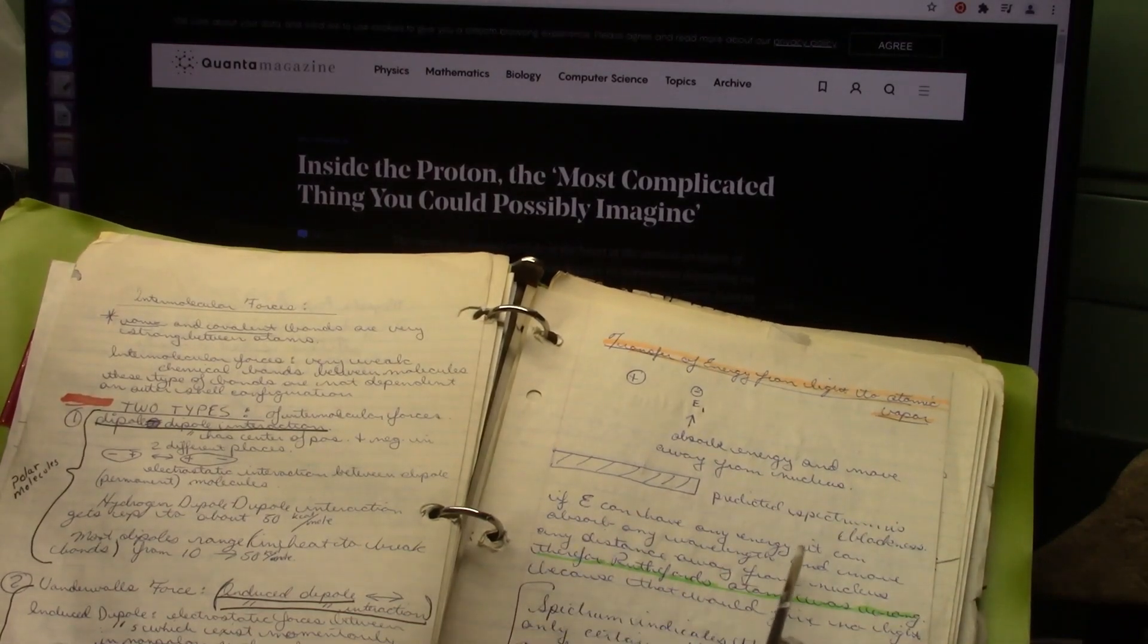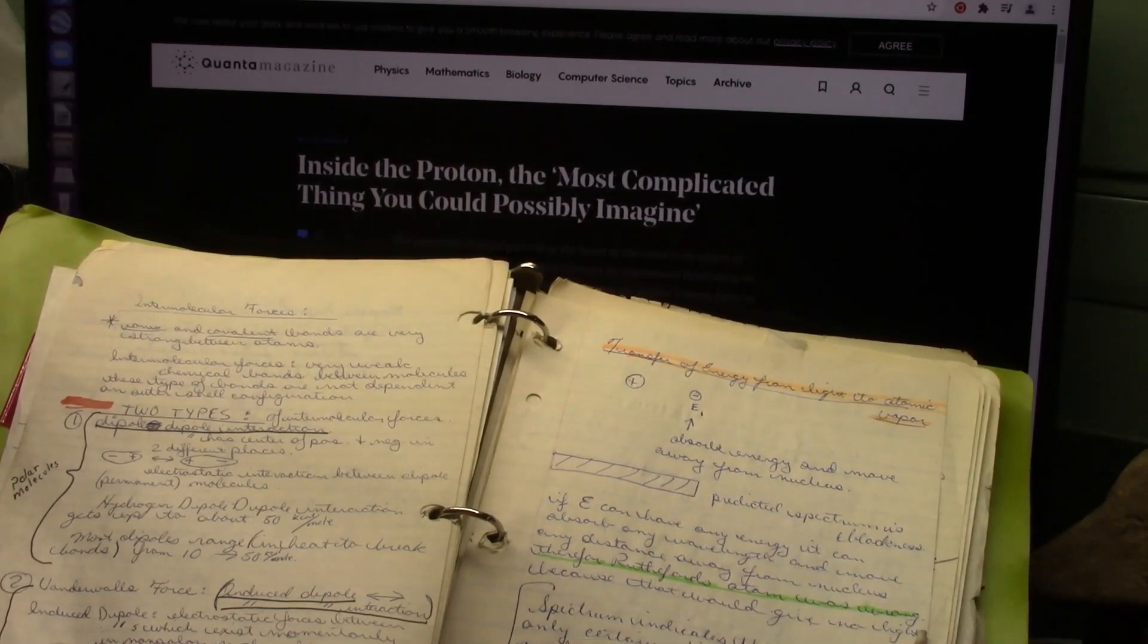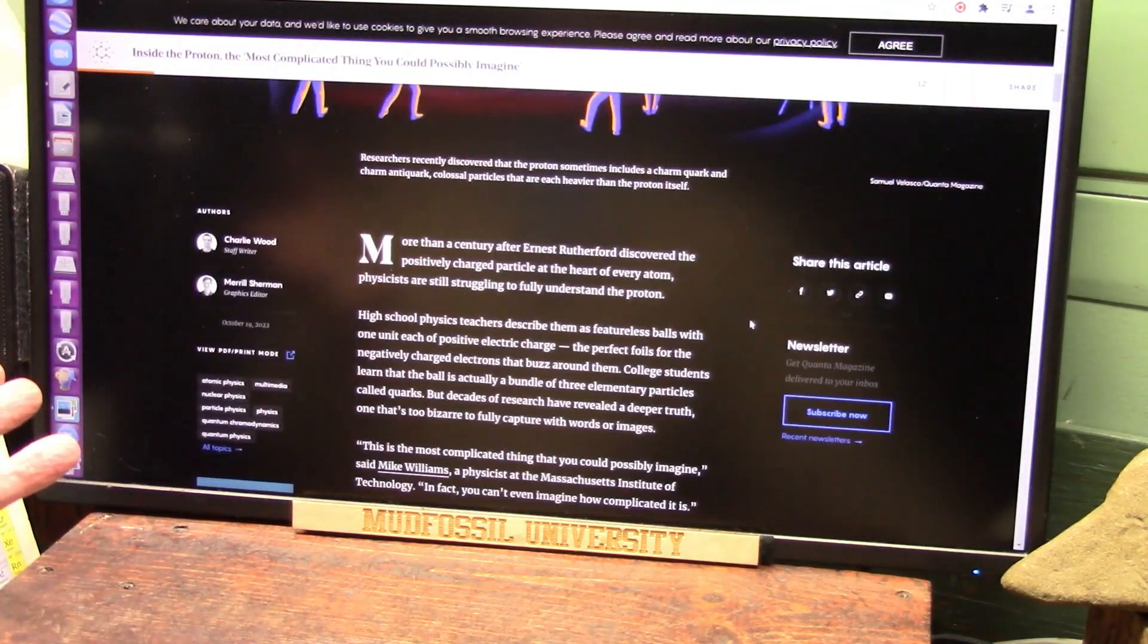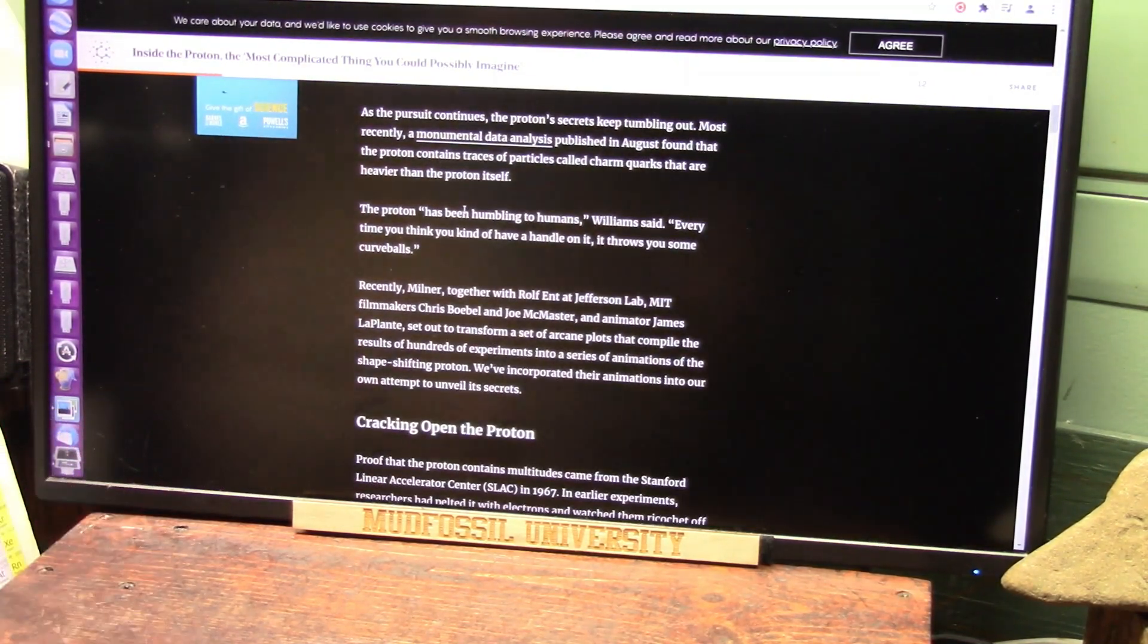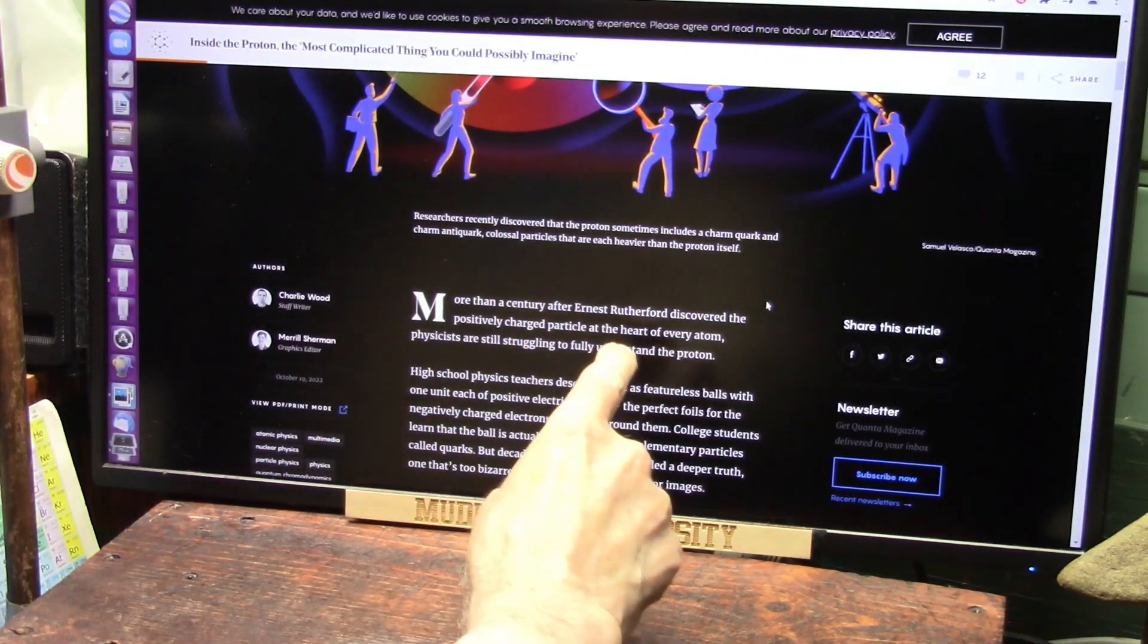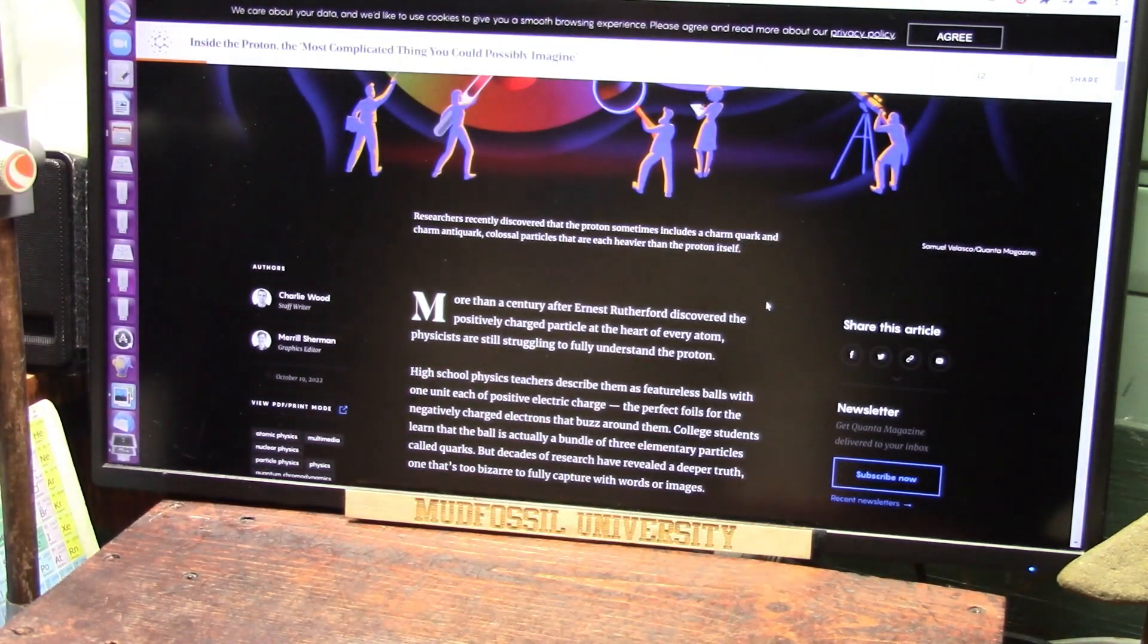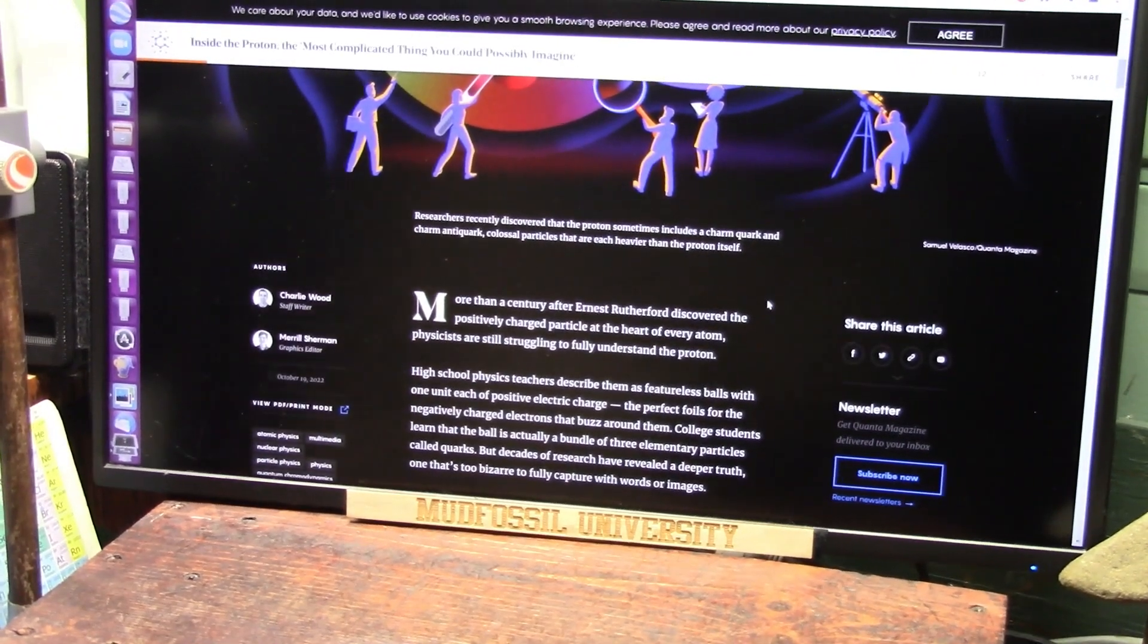I said, if energy can have any energy, it can absorb any wavelength and move any distance away from the nucleus. Therefore, Rutherford's atom was wrong. Anyway, they're talking about it. It's just funny. Because here they are talking about, after a hundred years, somewhere down here about Rutherford's atom. I said Rutherford's atom is wrong. More than a century after Rutherford discovered the positive charge particle at the heart of every atom. It's not positive charge. It's a dipole. Physicists are still trying to fully understand the proton. It doesn't work. It does not work. That's the problem.